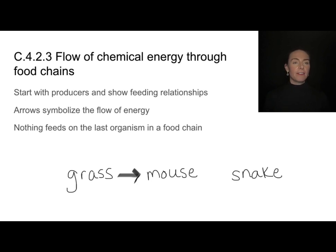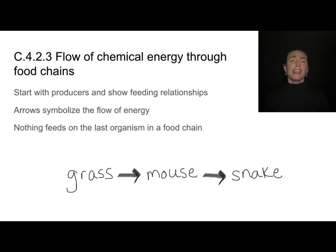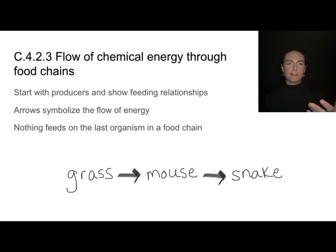A lot of students make the mistake of pointing their arrows in the wrong direction. I like to think of it as the grass goes into the mouth of the mouse — that's how I remember which way to make my arrows point. The final organism in a food chain should be something that nothing else feeds on. In this example, nothing feeds on this certain species of snake. If you have to construct a food chain, make sure you include specific species, most likely picked from a given list or diagram.